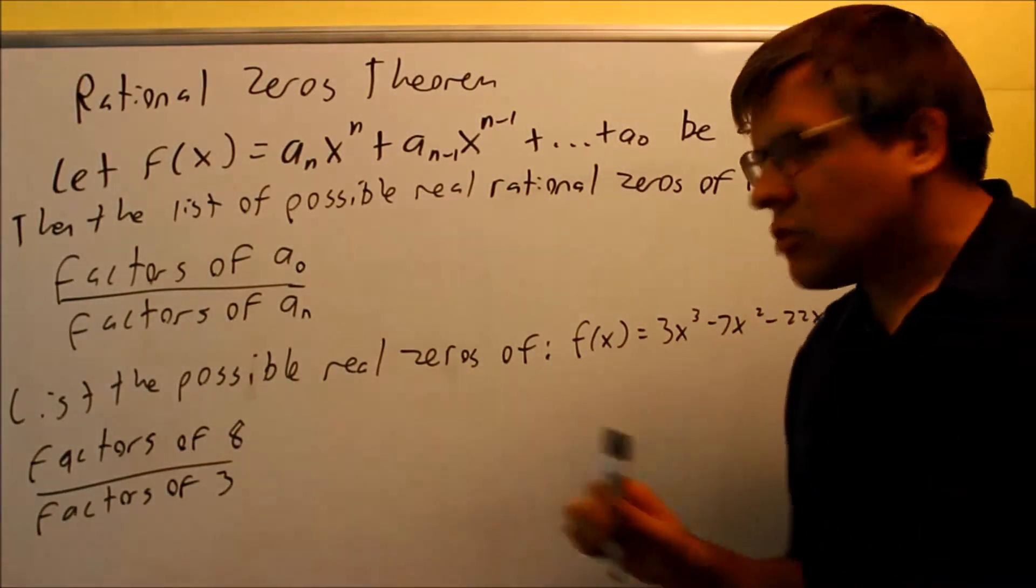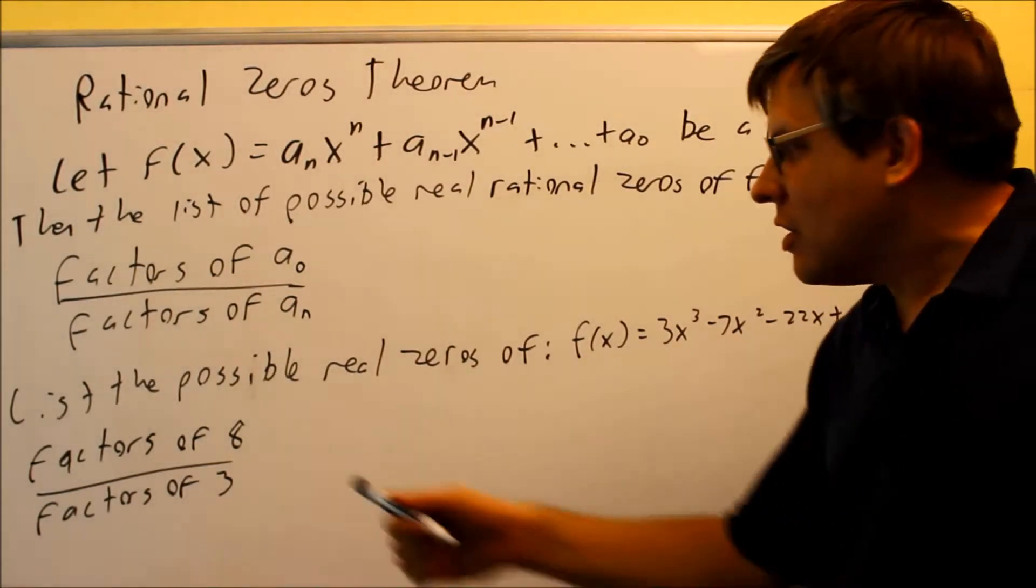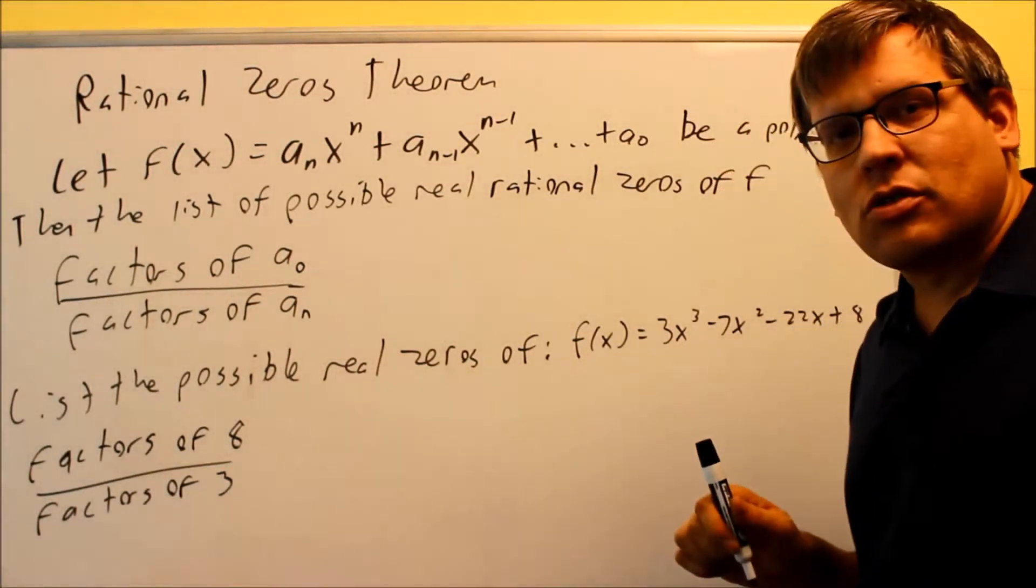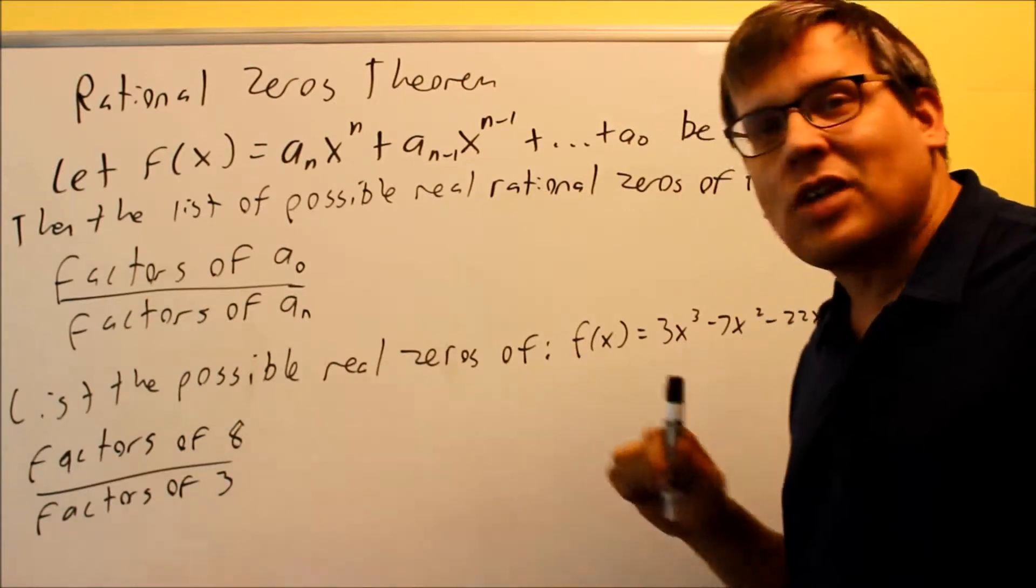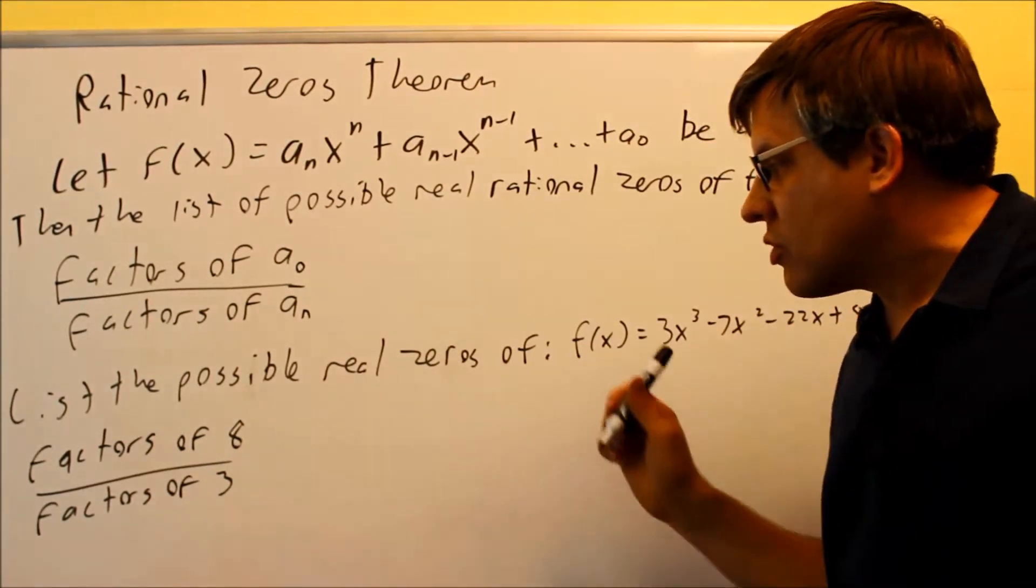So we need to actually write that out. First of all, we have to know, what's a factor? Well, a factor is a number that evenly divides into each of these. So you're going to look for numbers that divide evenly into 8, numbers that divide evenly into 3, and we're going to write those all out.